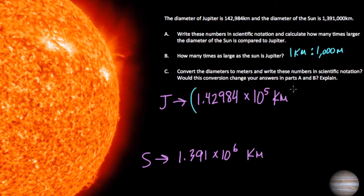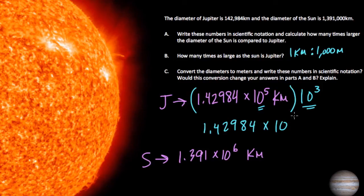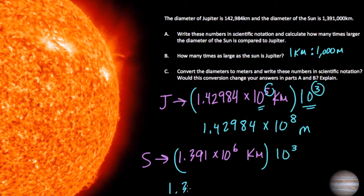So I'm just going to take each of these numbers and multiply them by 1,000. We can just think of it like this: times 10 to the 3rd, that's 1,000. I'm going to multiply 10 to the 3rd times 10 to the 5th, and I get 1.42984 times 10 to the 8th. Using that law of exponents there, this is in meters. Same idea for the Sun. Multiply it by 1,000, and that would give me 1.391 times 10 to the 9th.